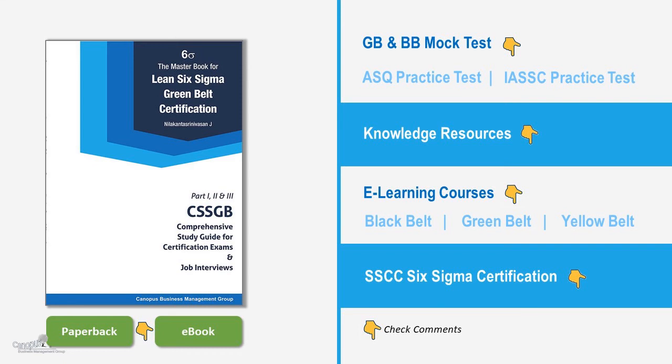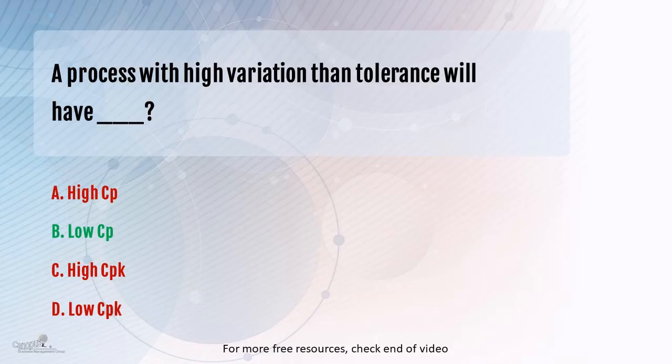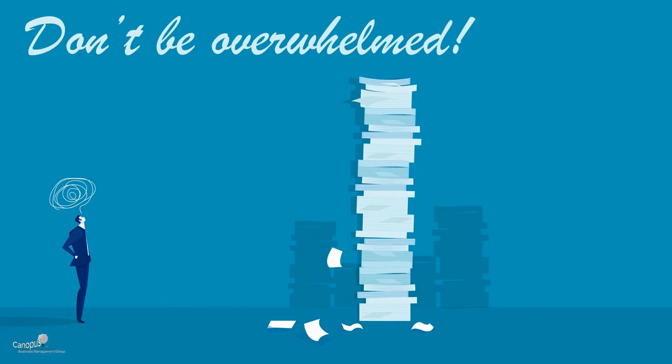Now, this question talks about a scenario where the variation is high compared to the tolerance. The tolerance is in the numerator and the variation is in the denominator, so we expect the CP value to be low. The answer is B. I have a couple of other questions relating to CPK in the series of IASSC and ASQ exam preparation.